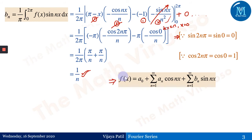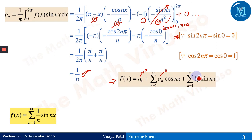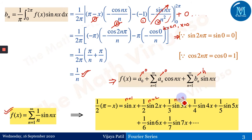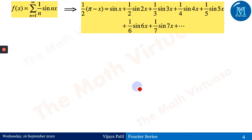Now writing the Fourier series expansion: since a₀ = 0 and aₙ = 0, only the bₙ terms survive. So f(x) = ½(π - x) = Σ (1/n) sin(nx). Expanding: sin(x) + ½ sin(2x) + ⅓ sin(3x) + ... This is the Fourier series expansion of f(x) = ½(π - x) on 0 to 2π. That addresses question 1.